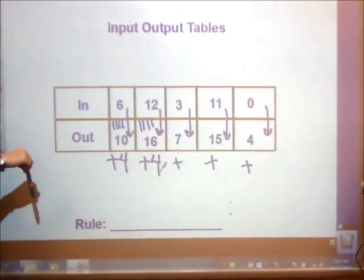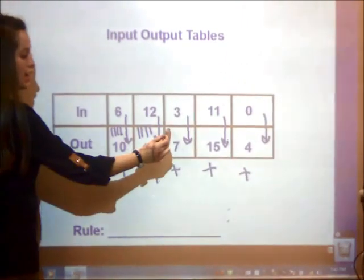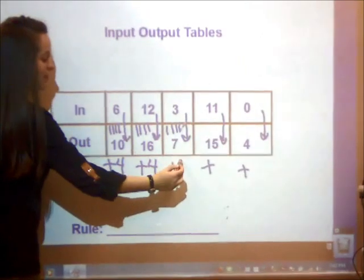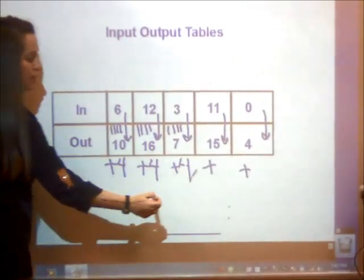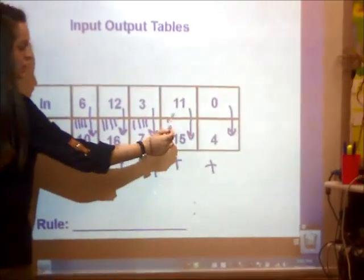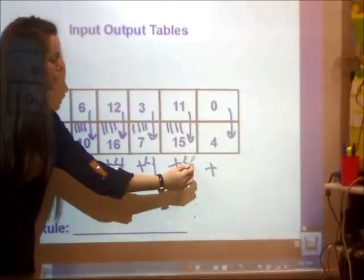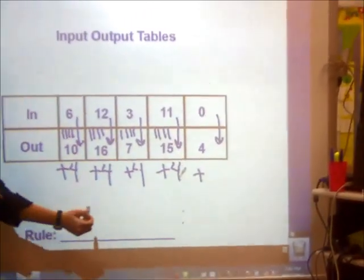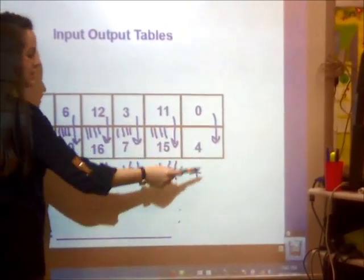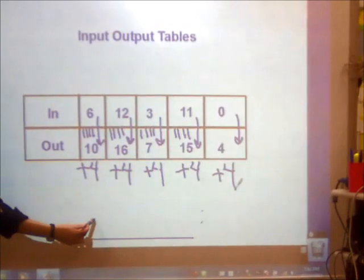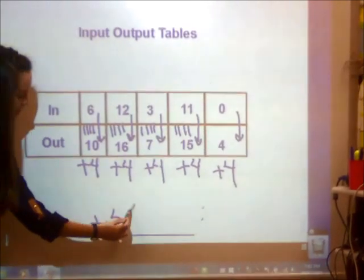3, 4, 5, 6, 7. Adding 4. 11, 12, 13, 14, 15. Adding 4. My last one, I know that 0 plus 4 is 4. So my rule must be, I'm adding 4. Let's try another one.